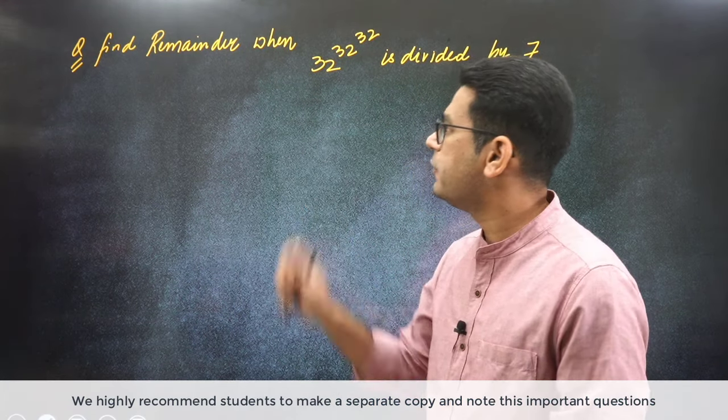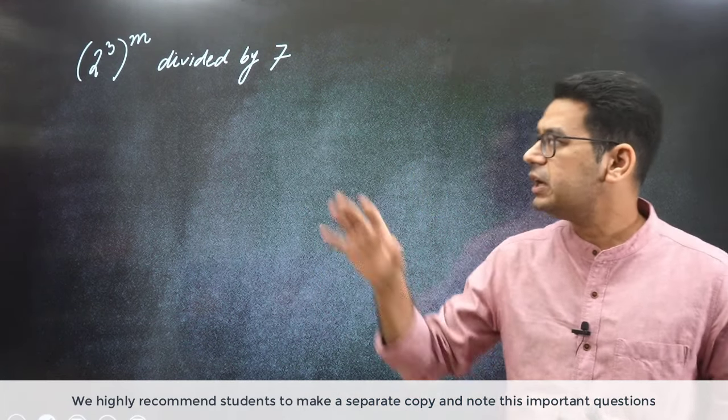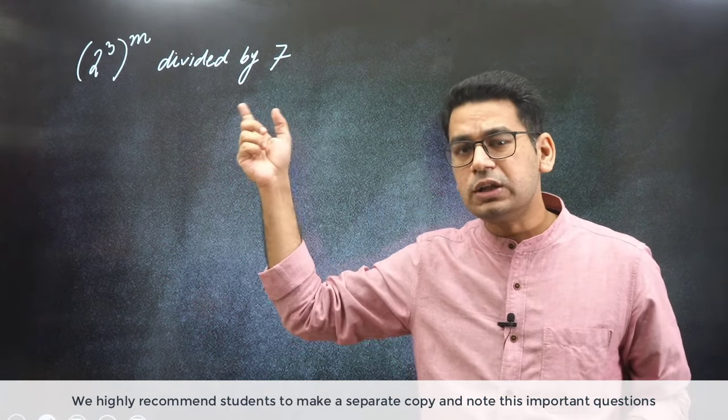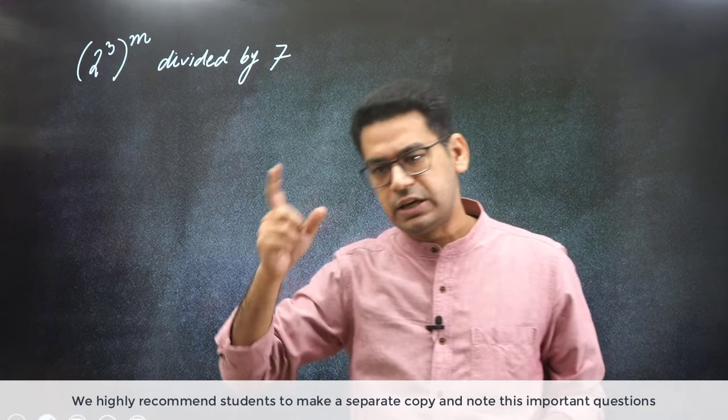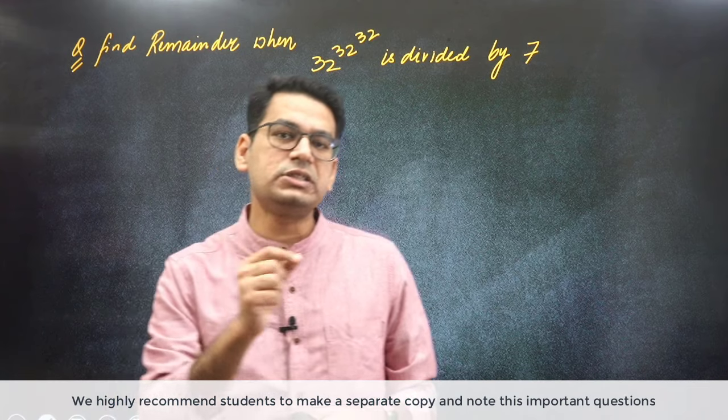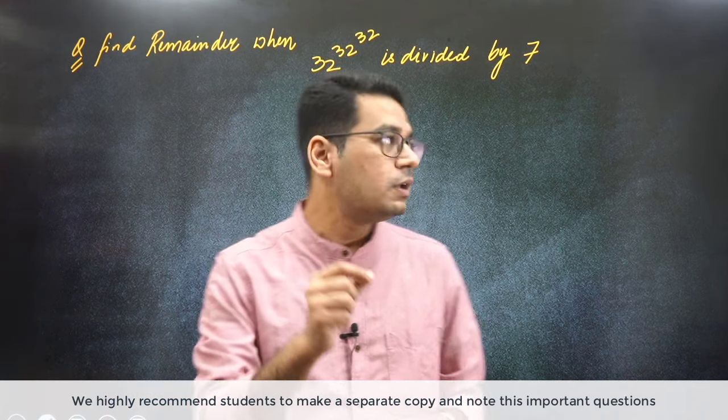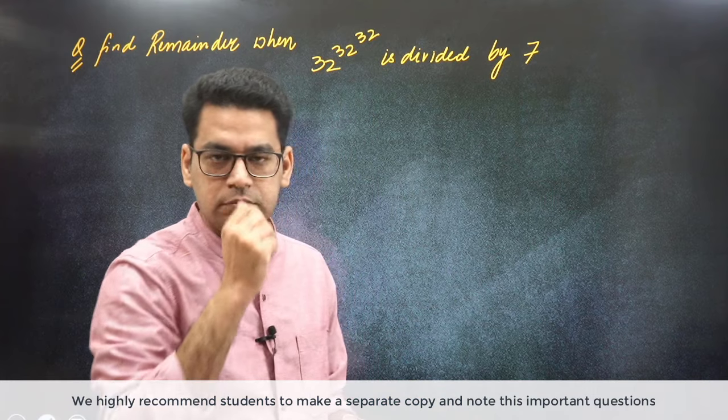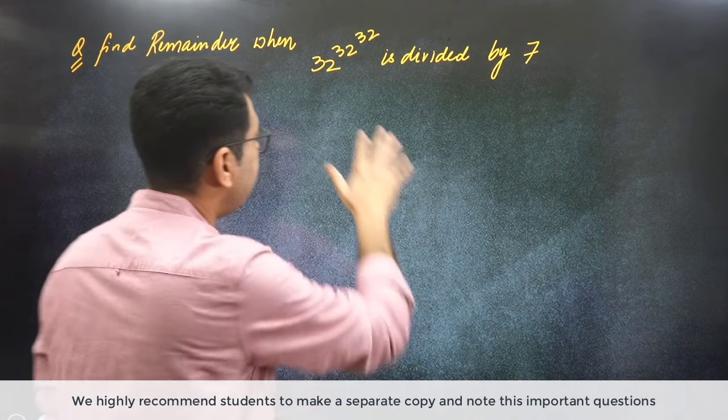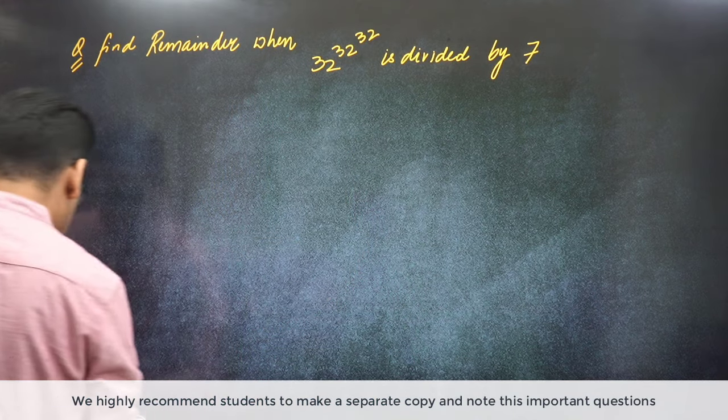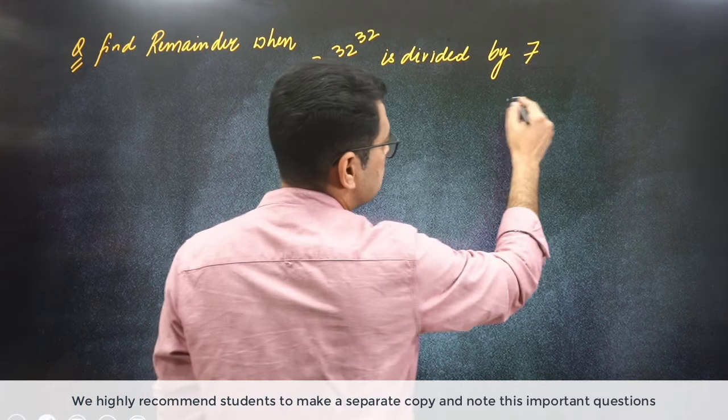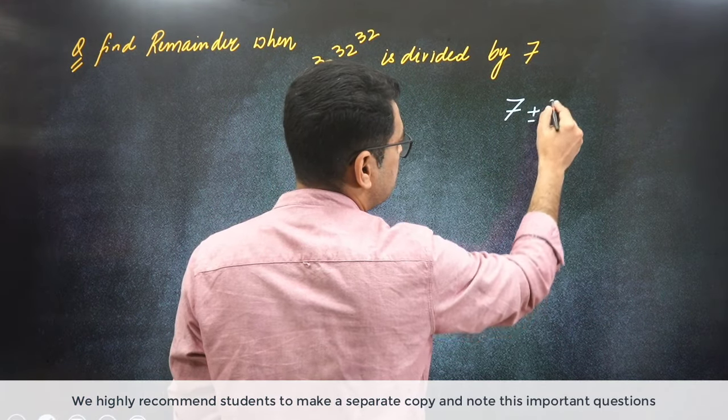So let's first of all simplify the problem. So if I say 2 raised to power 3 divided by 7. How are you thinking like this? So if I say divide by 7, always in these kind of problems, you have to find 7 plus minus 1. Again repeat, you have to think like 7 plus minus 1. So whatever number is here, it should be 7 plus minus 1.